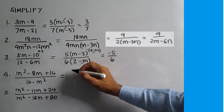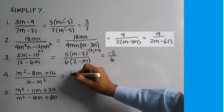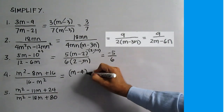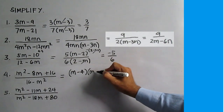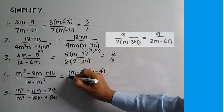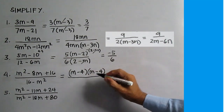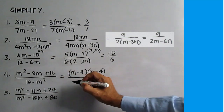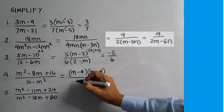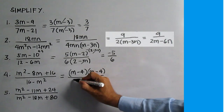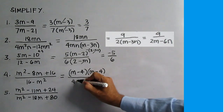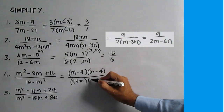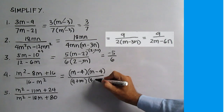Number 4. M squared minus 8M plus 16 is a perfect square polynomial. The factor is the square of M minus 4. All over 16 minus M squared, which is a polynomial in the form difference of two squares. The factors are in the form sum and difference of two terms: 4 plus M and 4 minus M.